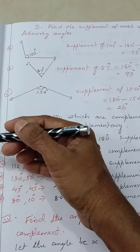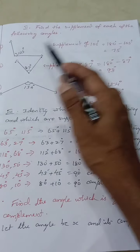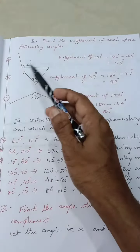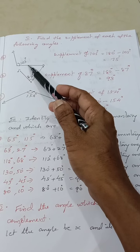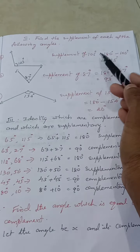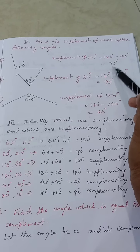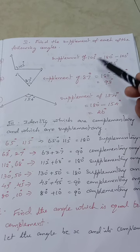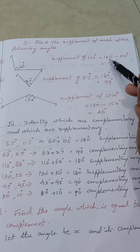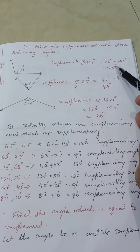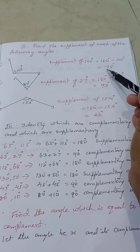Come to Roman numeral two: find the supplement of each of the following angles. The supplement of 105 degrees is 180 minus 105, which equals 75 degrees. To find a supplement, you subtract the angle from 180.